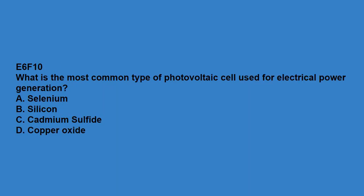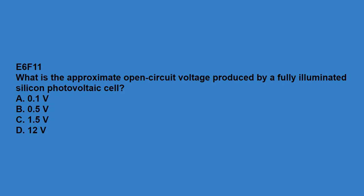E6F10: what is the most common type of photovoltaic cell used for electrical power generation? Silicon. E6F11: what is the approximate open circuit voltage produced by a fully illuminated silicon photovoltaic cell? 0.5 volts. That concludes the questions in sub-element E6. Continue to follow us as we release the additional videos in the extra class question pool.